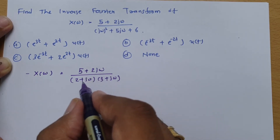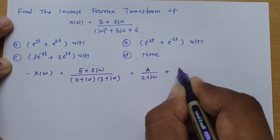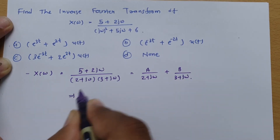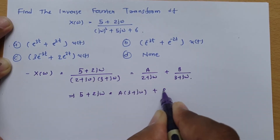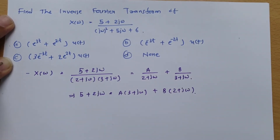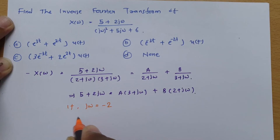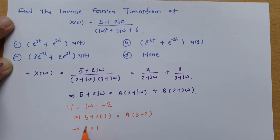Applying partial fraction expansion: X(Ω) = A/(2 + jΩ) + B/(3 + jΩ). Taking the LCM: 5 + 2jΩ = A(3 + jΩ) + B(2 + jΩ). To find A, set jΩ = −2 so the B term cancels: 5 + 2(−2) = A(3 − 2) → 5 − 4 = A · 1 → A = 1.